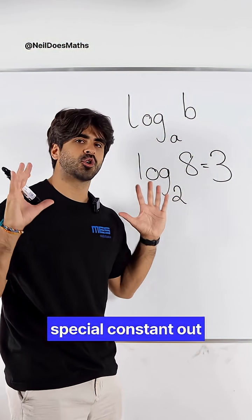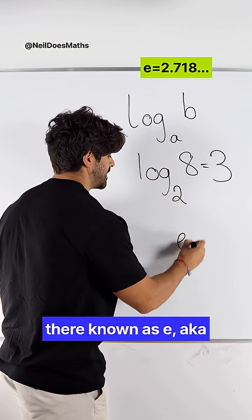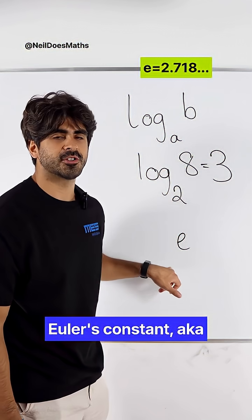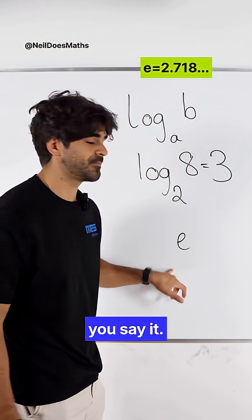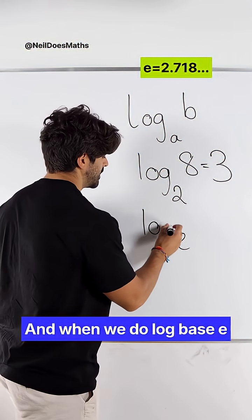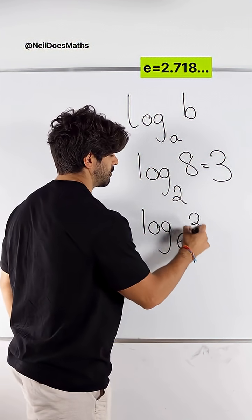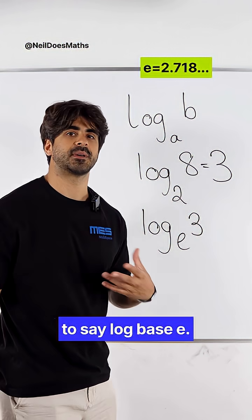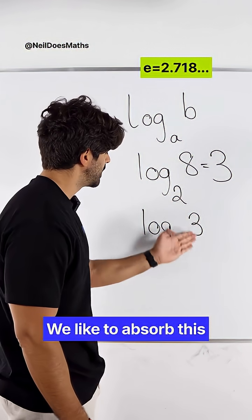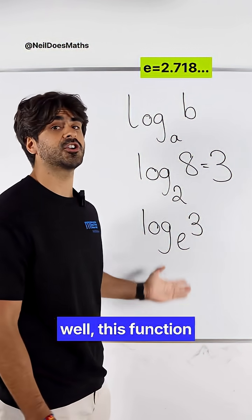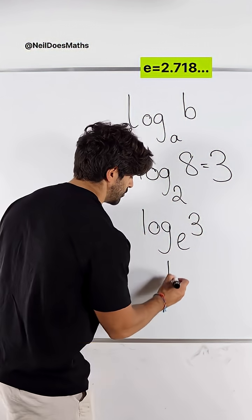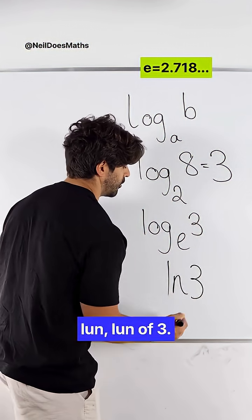Now there is a very special constant out there known as e, aka Euler's constant. It depends how you say it. And when we do log base e of a particular number, for example 3, we don't like to say log base e. We like to absorb this function, log base e, into ln - ln of 3.